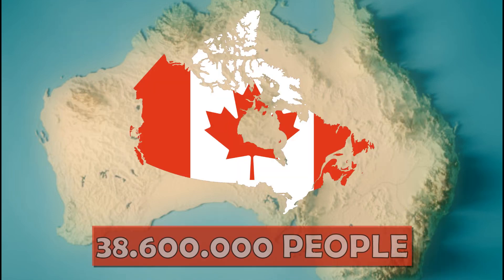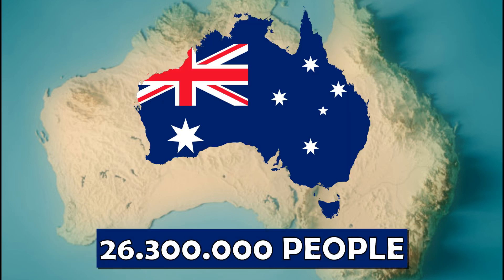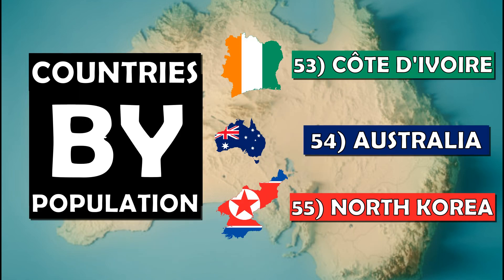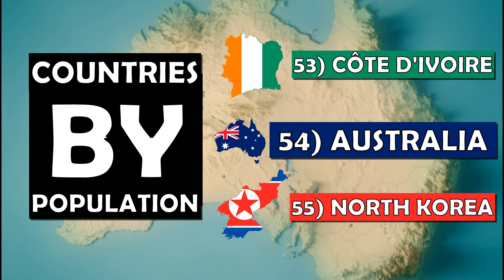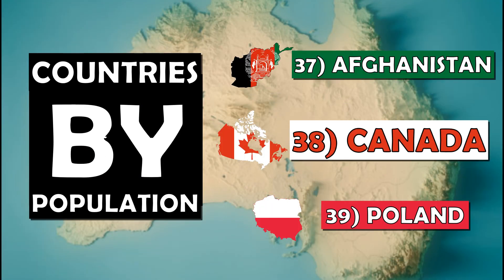Canada is home to 38.6 million people and has an annual population growth of 0.85%. Australia is home to a smaller 26.3 million people, but has a higher annual population growth rate of 1%. This makes Australia the 54th largest country by population, with Canada 16 places ahead at 38th place.